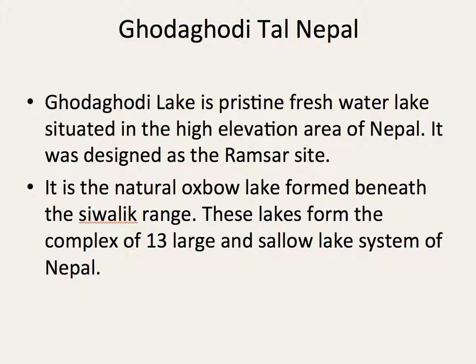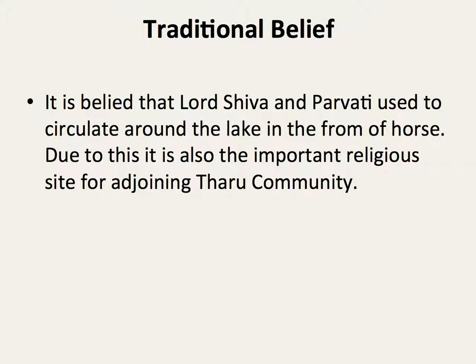Godagodi Lake is a pristine freshwater lake located in the higher elevation area of Nepal. It was designated as a Ramsar site. It is also a natural Oxbow Lake formed beneath the Shivalik Range. This lake forms a complex of 13 large and shallow lake systems in Nepal.